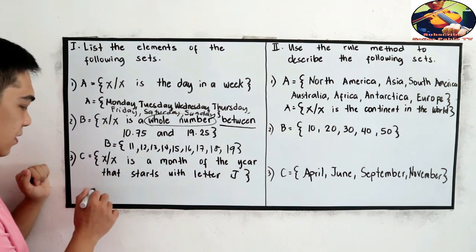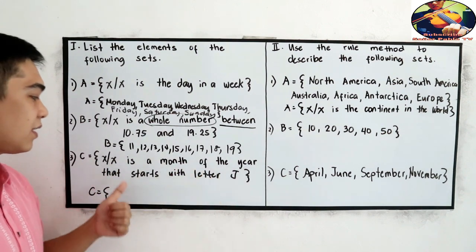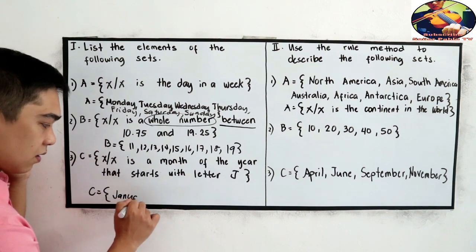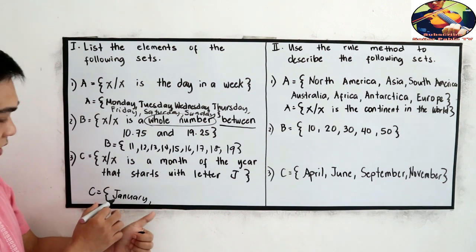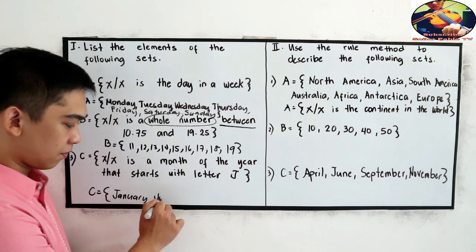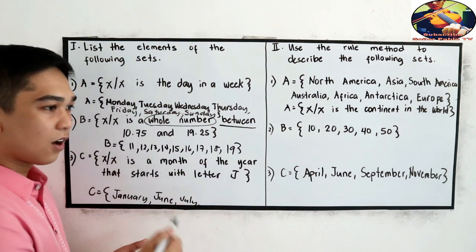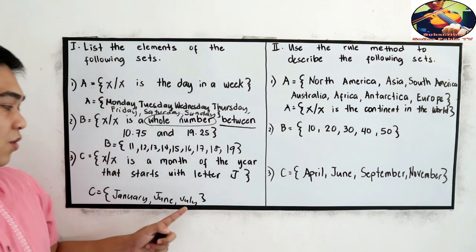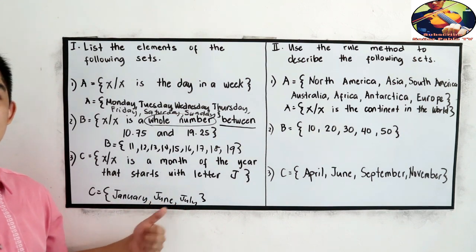Now letter C, such that x is a month of the year that starts with letter J. So we have January, June, and July. So January July and June. Did you get it?